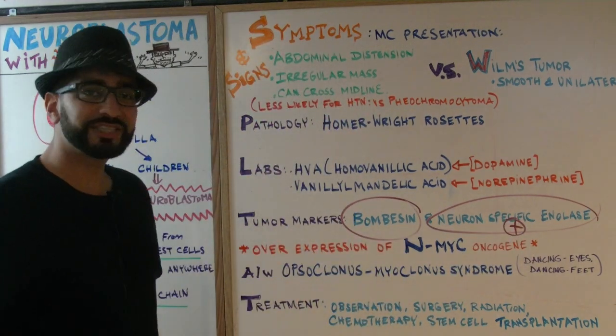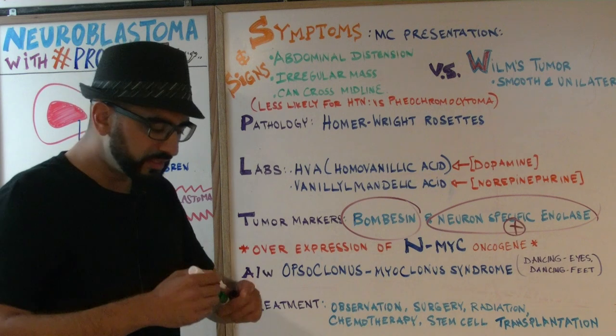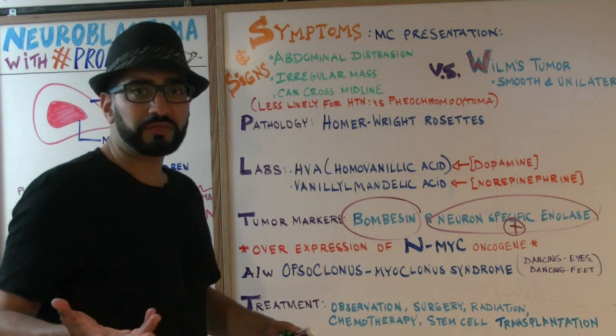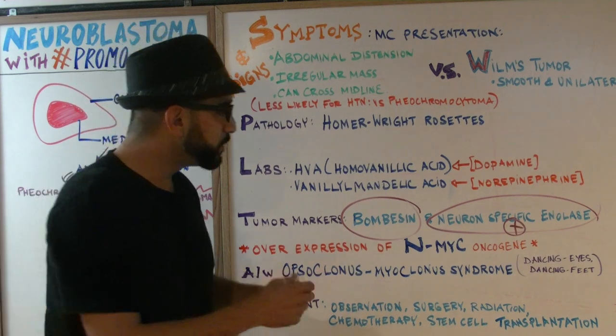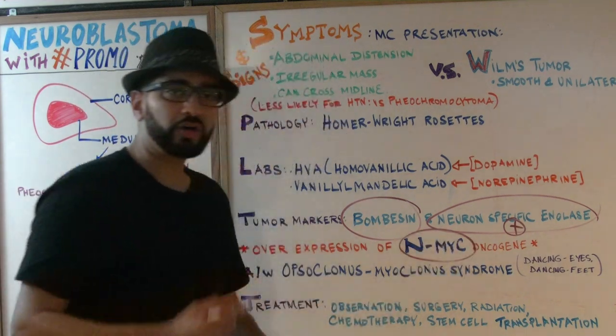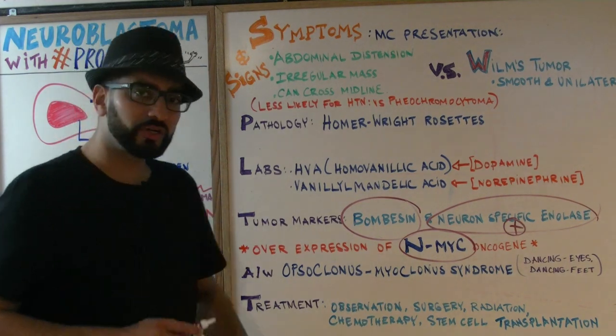They may also ask you what oncogene is overexpressed in neuroblastoma. You want to know that it is the N-myc oncogene — overexpression of the N-myc oncogene.